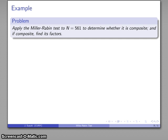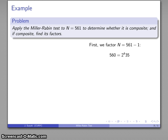For example, let's take a look at 561 and see whether that's composite. First of all, we'll factor 561 minus 1. That works out to be 2 to the 4th times 35. I'll pick a equals 2 as a convenient base to work with. We'll find 2 to the power of 35,